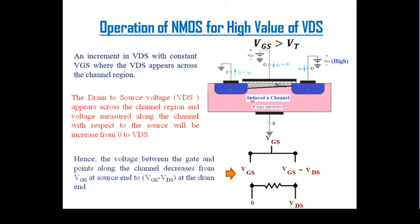Hence, what we observe is that the channel depth depends on the gate voltage — specifically the gate-to-channel voltage. The channel is no longer uniform. Initially, the gate-to-channel voltage is VGS at the source side, but at the drain side it is VGS minus VDS. So the channel has a tapered shape — deepest at the source end and shallowest at the drain end.